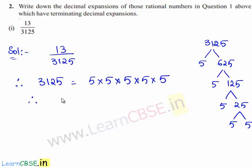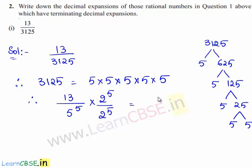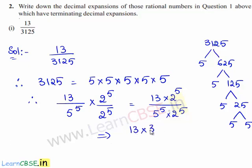Therefore the given rational number becomes 13 upon 5 power 5. Now we shall multiply the given rational number with 2 power 5 on both numerator and denominator. Therefore 13 upon 5 power 5 multiplied by 2 power 5 over 2 power 5 gives 13 times 2 power 5 upon 5 power 5 times 2 power 5. This implies 13 times 32 divided by 10 power 5, which gives 416 by 10 power 5.